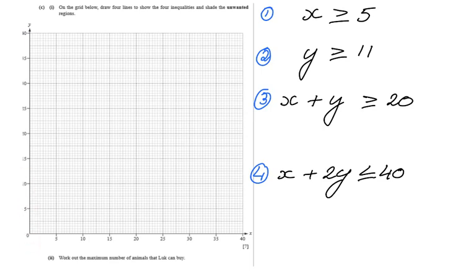This is part B. Part A we created these four inequalities, so make sure you have seen part A. Now we continue with question C where it says on the grid below, draw four lines to show the four inequalities and shade in bold the unwanted regions. Sometimes they say shade the wanted region, sometimes leave the wanted region unshaded, so we really got to pay attention. We got to shade the unwanted region.